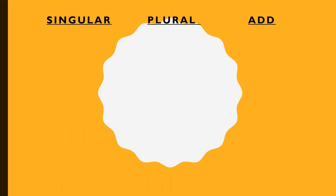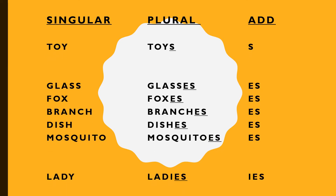How to change a singular noun into a plural noun. We can add 's' to the singular noun and it becomes a plural noun. For example, 'toy' — we add 's' and it becomes 'toys'.